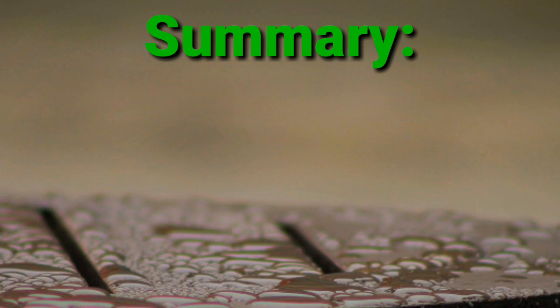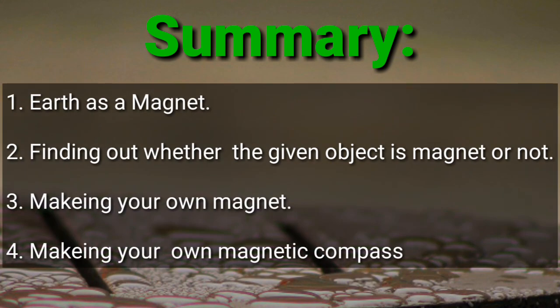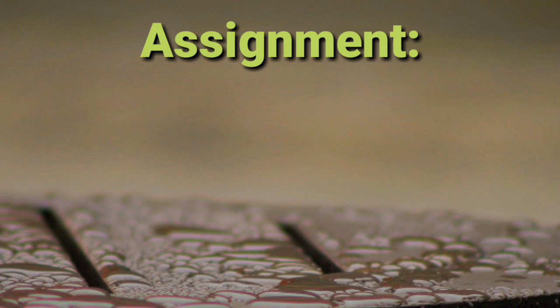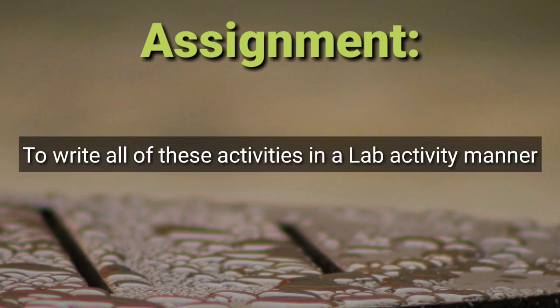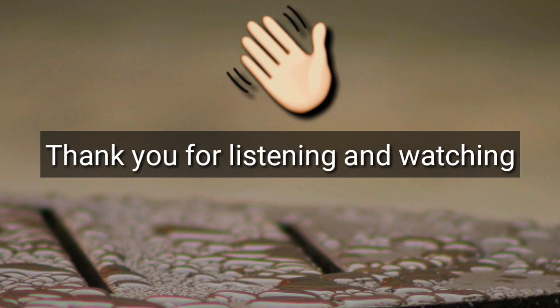Students, as of now we have talked about earth as a magnet, finding out whether a given object is a magnet or not, making your own magnet, and making your own magnetic compass. I hope you understood the topics we covered today. The assignment I am giving you is to write all of these activities in a lab activity manner. Okay students, this is all for today. Thank you for listening. Thank you one and all.